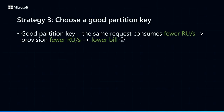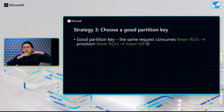Finally, for the last strategy, I want to briefly talk about the importance of choosing a good partition key. Choosing a good partition key can be a topic that takes a whole hour, so I just want to demonstrate how powerful choosing a good partition strategy can be and the big impact it has on your cost and performance. A partition key in Cosmos DB helps Cosmos DB route all your requests efficiently, whether you're doing reads or writes. With good partitioning, the same request would consume fewer RUs than if you pick a bad partition key. If you consume fewer RUs, that means you can provision fewer RUs, and because you're billed for what you provision, your bill is also lower.